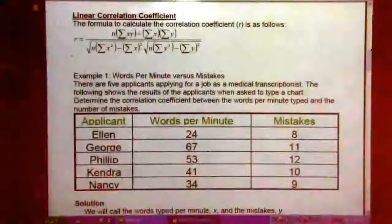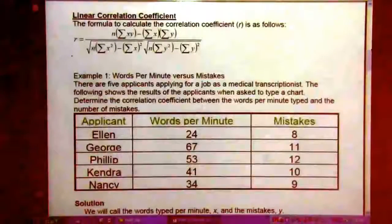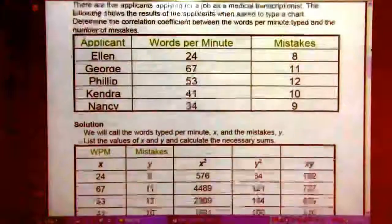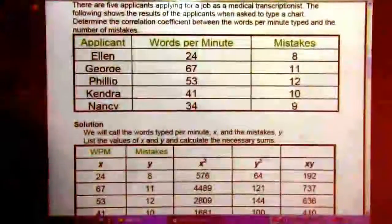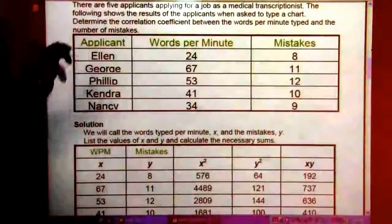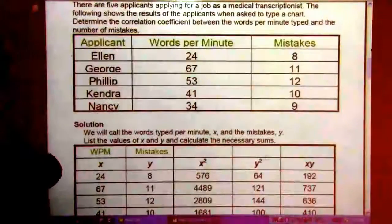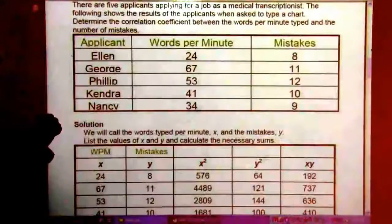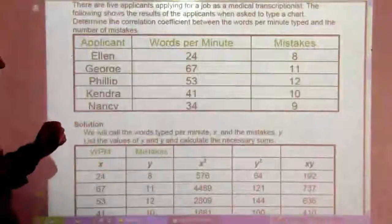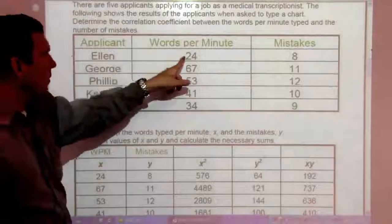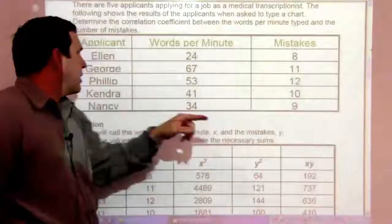So, example one. Words per minute versus mistakes. There are five applicants applying for a job as a medical transcriptionist. The following shows the result of the applicants when asked to type a chart to determine the correlation coefficient between the words per minute typed and the number of mistakes. So, Ellen has 24 words per minute, 8 mistakes.